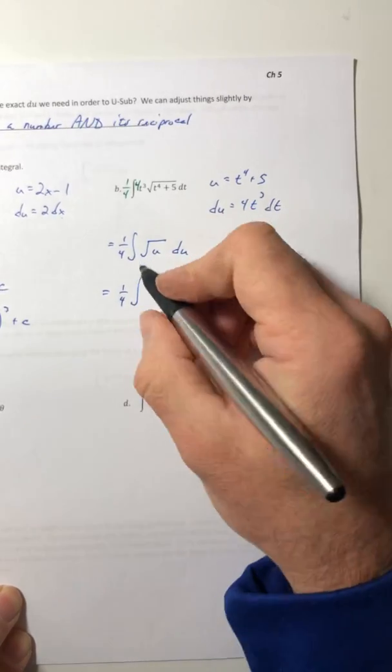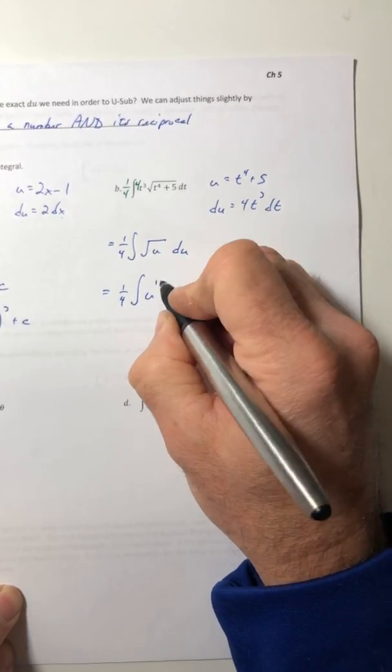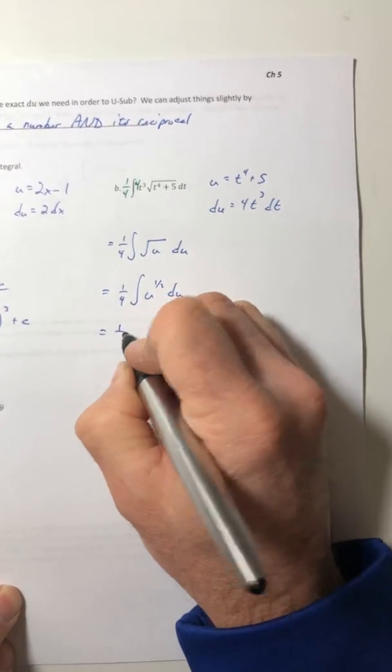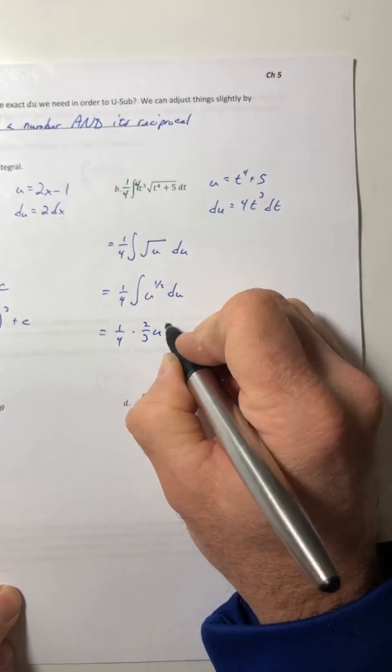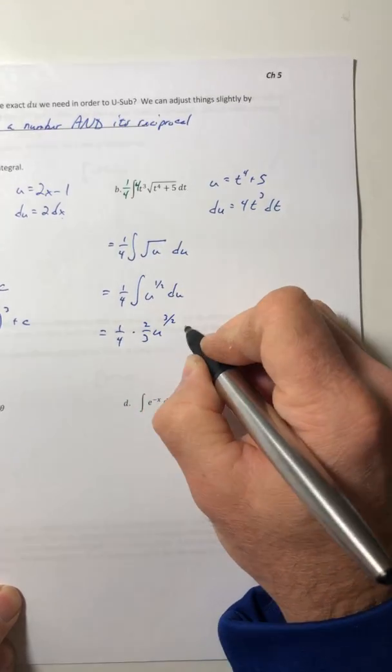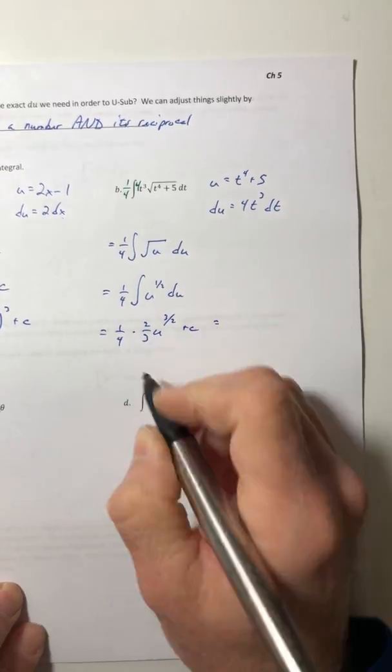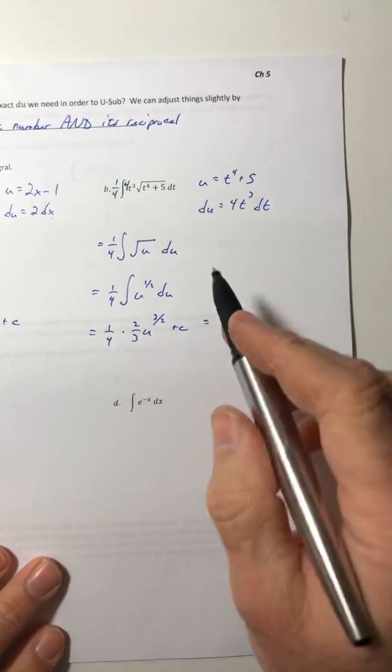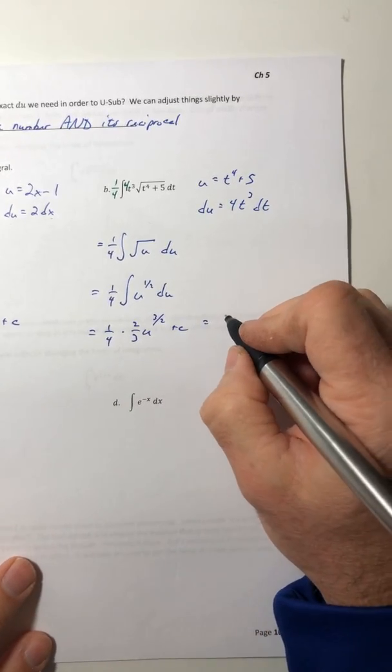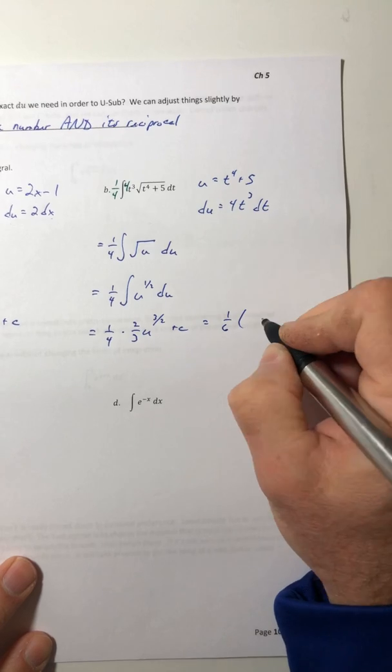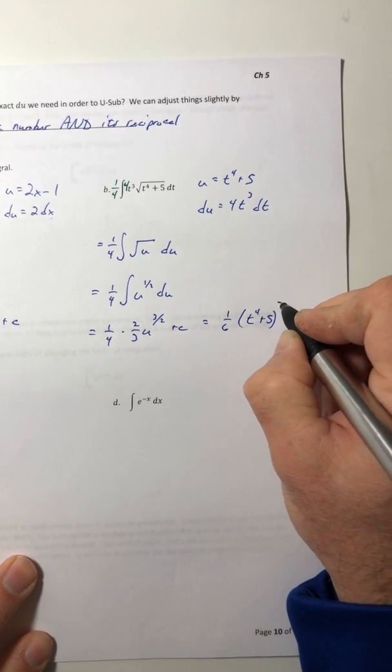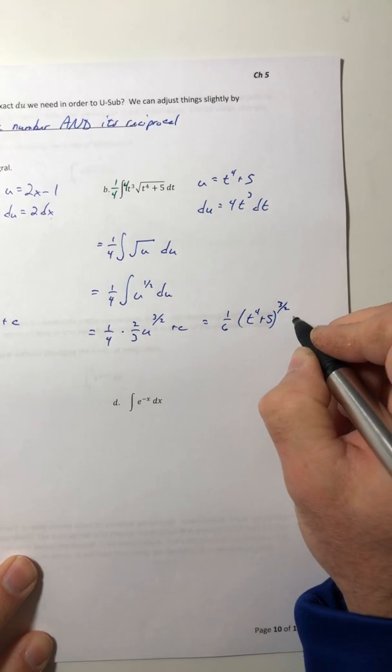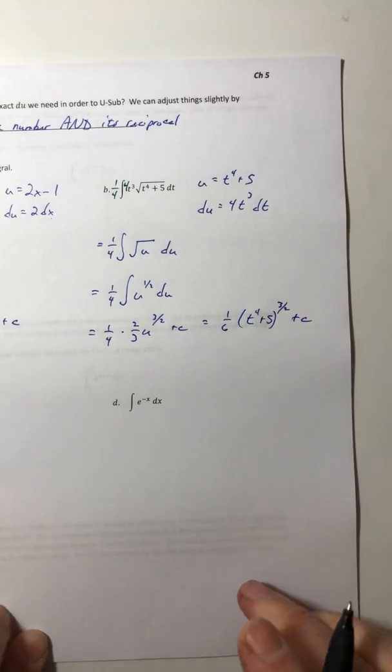So integrate the root u, so u to the half, and that'll be two-thirds u to the three-halves plus c. Multiply your fraction and simplify it, so one-sixth and t to the fourth plus five to the three-halves plus c.